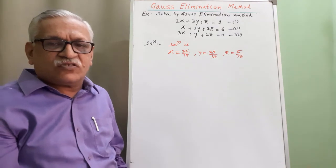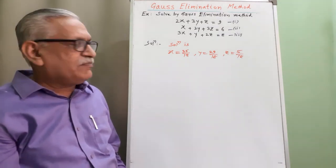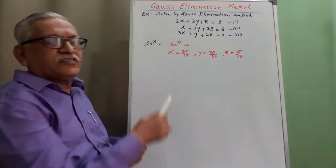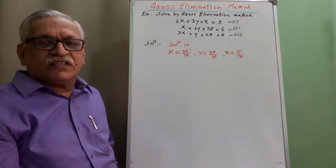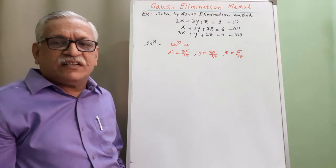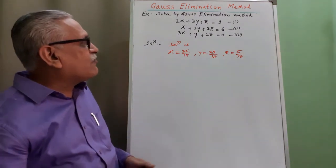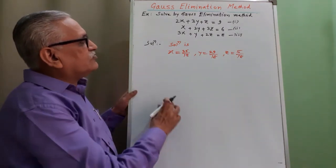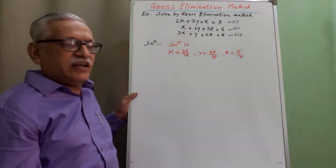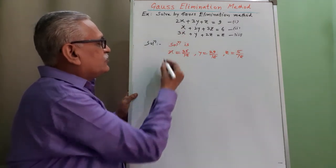To check whether the obtained solution is correct or not, we can verify by substituting these values into all three equations — as I have explained in my previous video. If all equations are satisfied, we can say the obtained solution is the correct one. I will demonstrate for one equation, and for the remaining two you should perform it yourself.